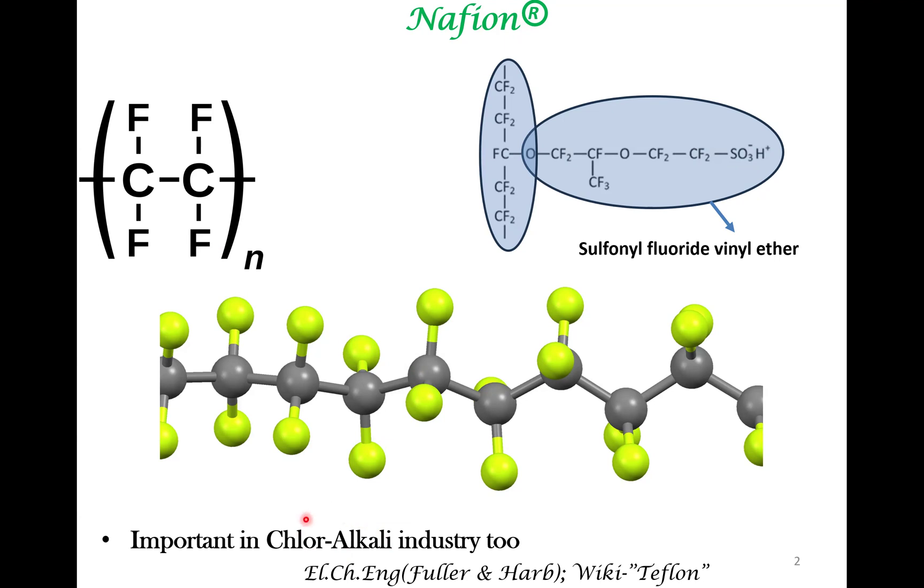So this is an important industry which generates chlorine and as well as NaOH. So it is claimed that 3% of electricity that is used in advanced economies goes into chloralkali industry. So this is probably the largest electrochemical industry. And chlorine and NaOH are large commodity chemicals. So all this tells you the importance of Nafion in broader context of electrochemical systems.